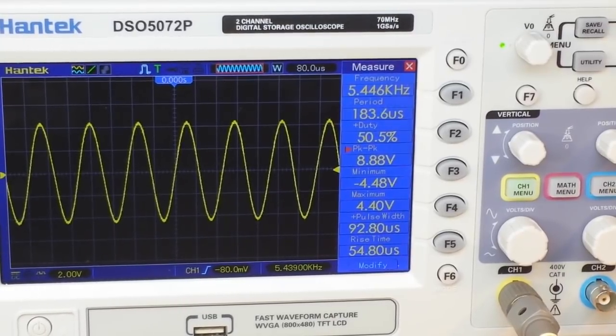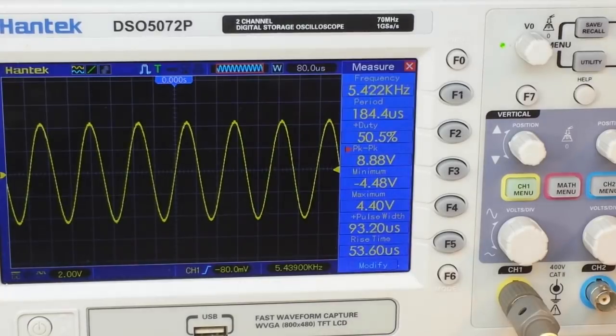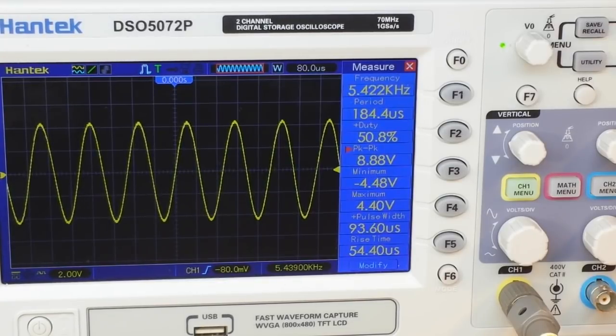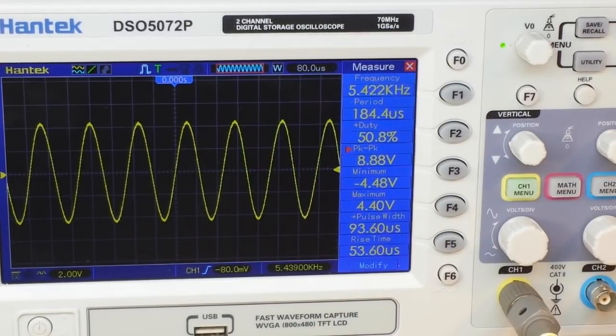Now if you look down at the bottom of the screen here, you can see our frequency is 5.4 kilohertz, it's a sine wave. And if you look at the peak to peak where the red triangle is there, you can see we're getting 8.8, 8.9 volts, because that frequency is within our band.